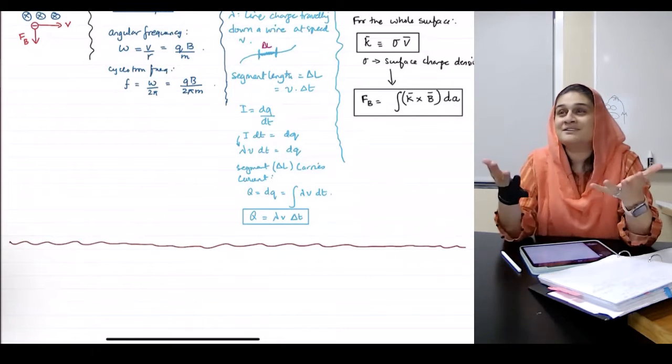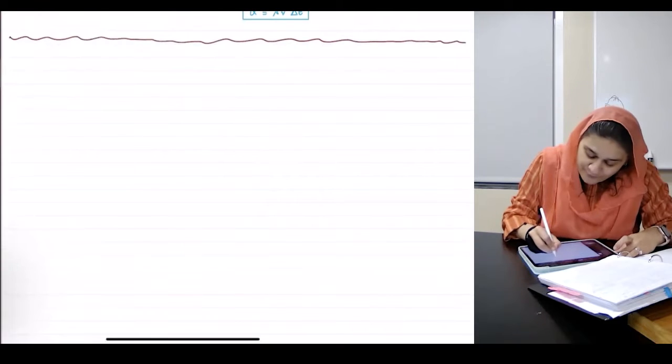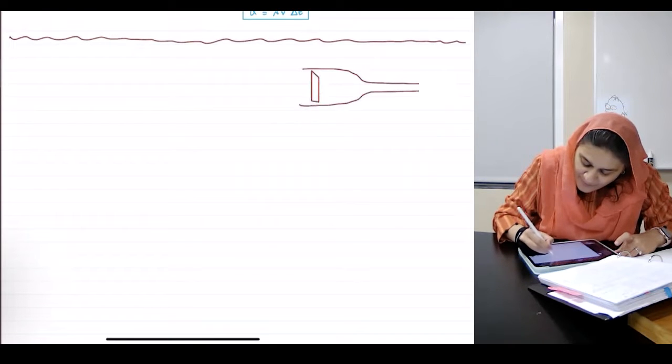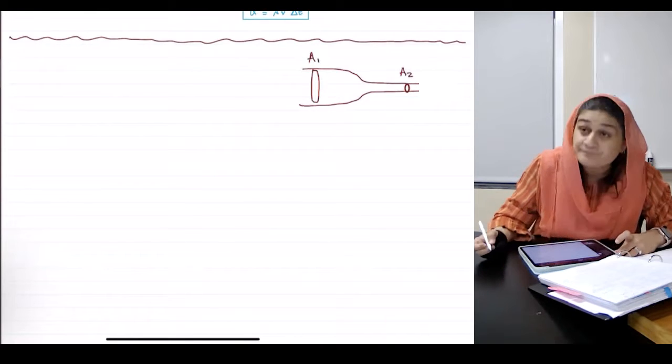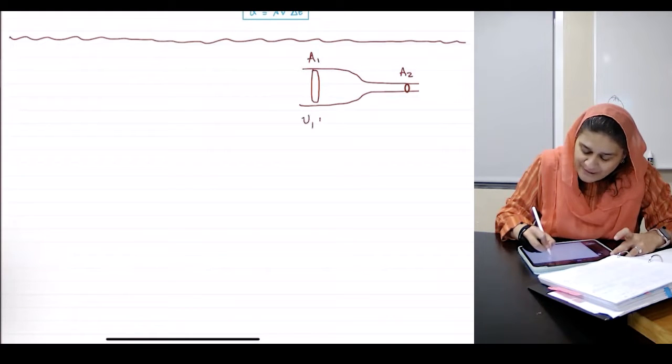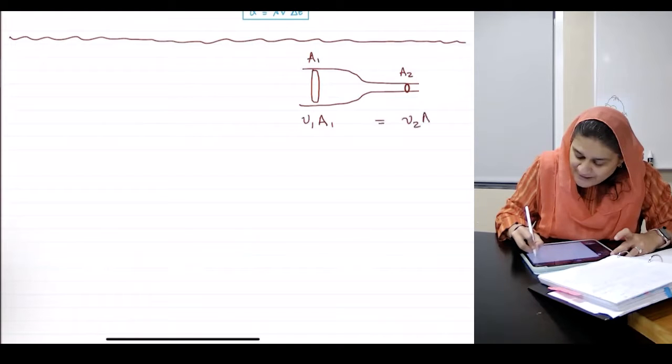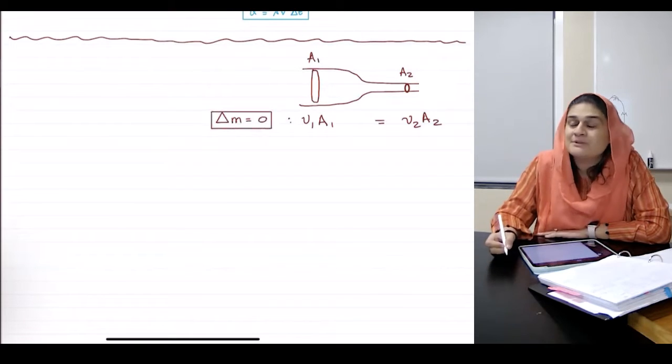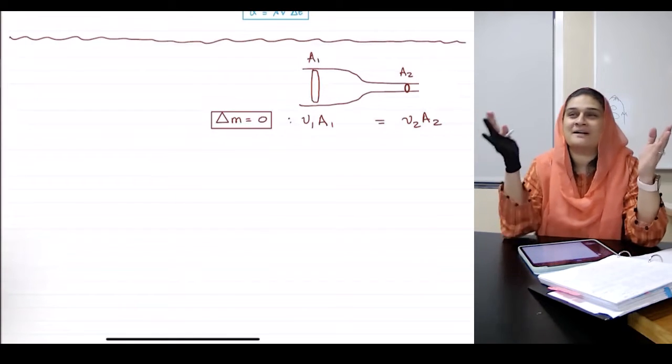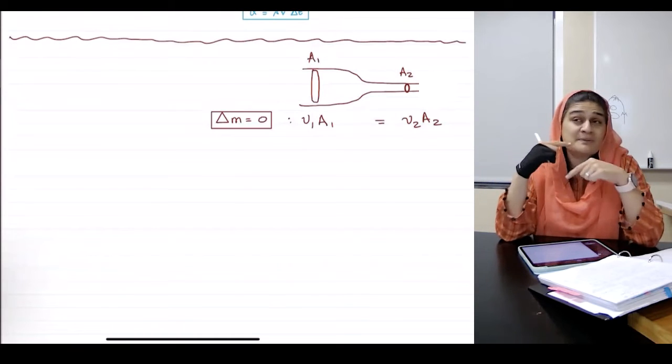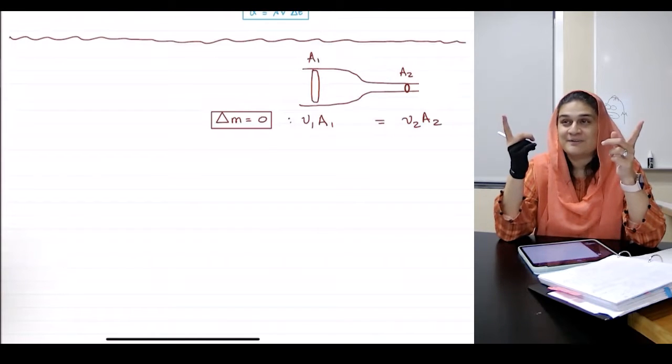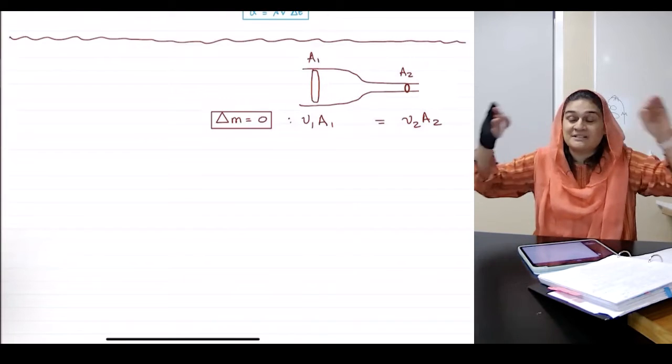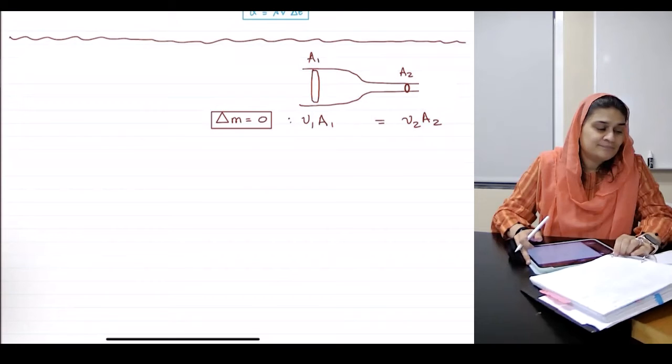That is actually a direct result of the continuity equation. So for fluids, this is what the continuity equation says. If this is my area 1 and this is my area 2, velocity at point 1 and velocity at point 2. Because delta M is 0. What does delta M equal 0 mean? That the mass did not change between point 1 and point 2, right? That means which speed must be larger, V1 or V2? Excellent, right? So V2 must be larger because the area has gotten smaller. And those two numbers need to be the same.